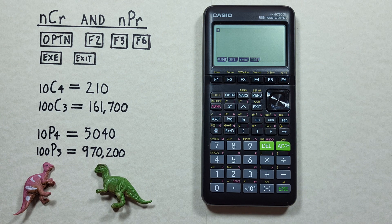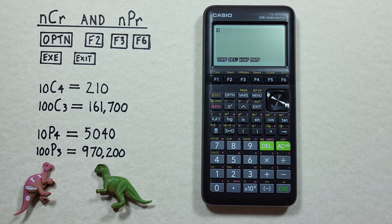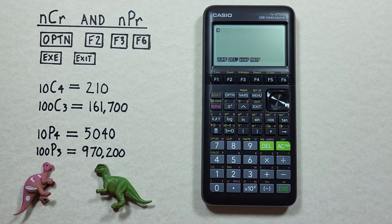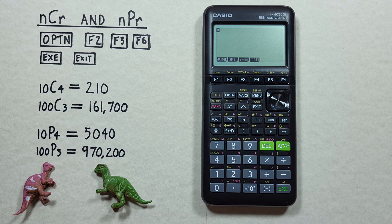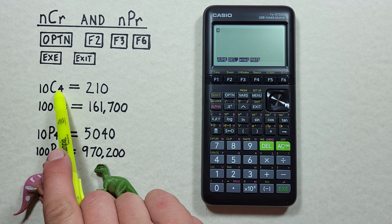First, we'll look at combinations, which is a situation where we choose a number of objects from a set and the order that they're chosen does not matter. An example of this would be 10 objects, choose 4, and it would be written like this.